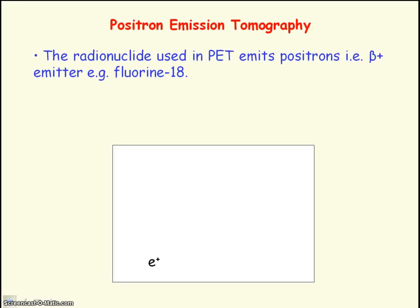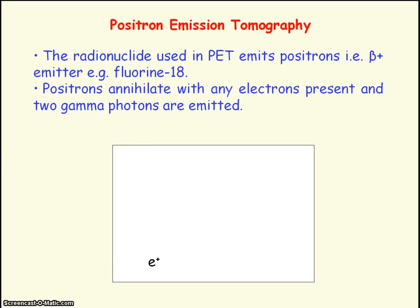Another form of radionuclide imaging is positron emission tomography, or PET for short. In this case the radionuclide emits positrons — that is, it is a beta-positive emitter — and an example would be fluorine-18. The positrons that are emitted will annihilate with any electrons that are present, meaning they completely destroy each other, and two identical gamma photons will be produced travelling in opposite directions in order to conserve momentum.